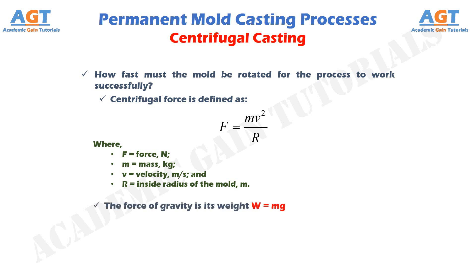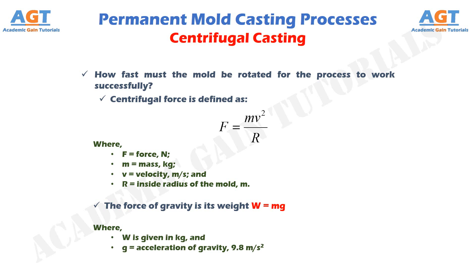The force of gravity is its weight: W equals Mg, where W is given in kg and G represents acceleration of gravity, 9.8 meters per second squared.